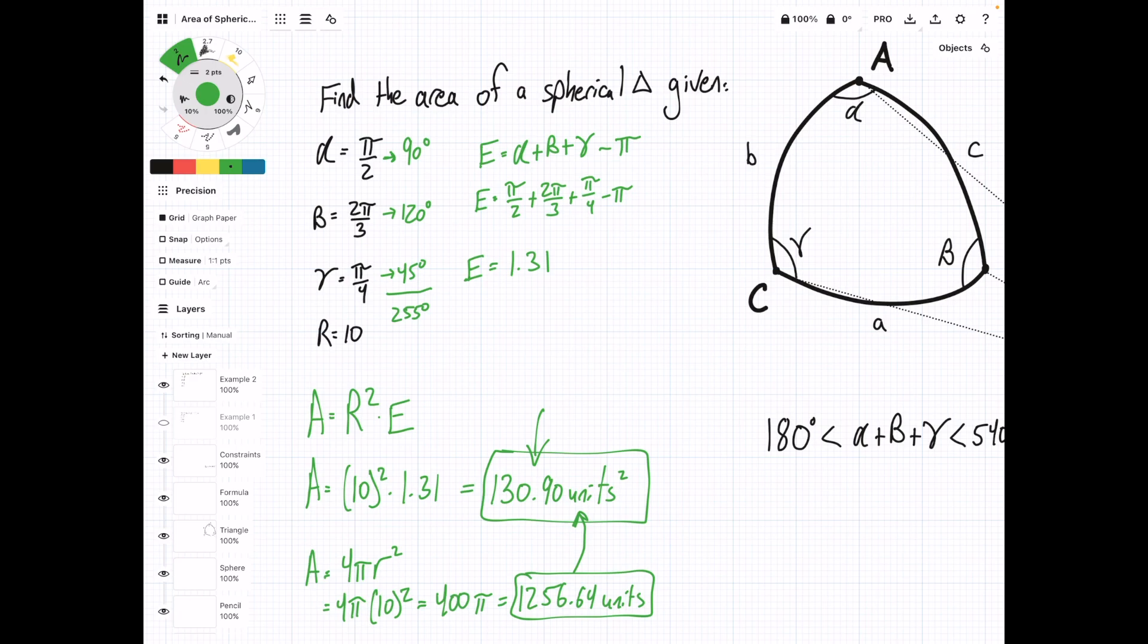Another thing is, if you're more comfortable working with degrees, you can just convert each of these radian values to degrees, which I did here already, and they all add up to 255. Now we can find the spherical excess in degrees. We're going to have 255 degrees minus 180, and this is going to equal 75 degrees.